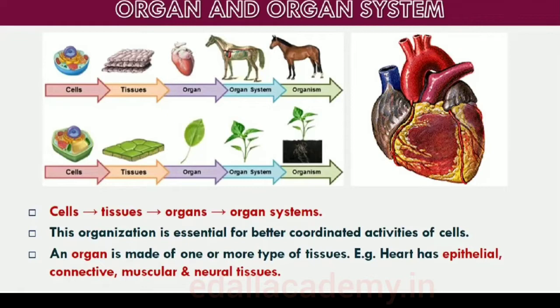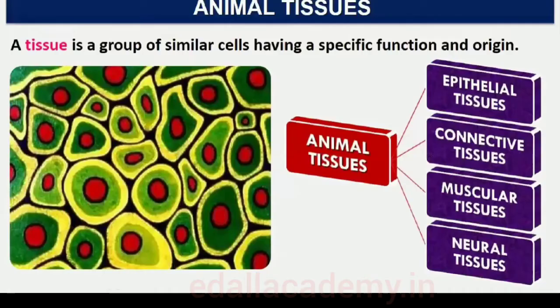Cells, tissues, organs and organ systems split up the work in a way that exhibits division of labor and contribute to the survival of the body as a whole. The structure of the cells varies according to their function. Therefore, the tissues are different and are broadly classified into four types: Epithelial, Connective, Muscular, and Neural.